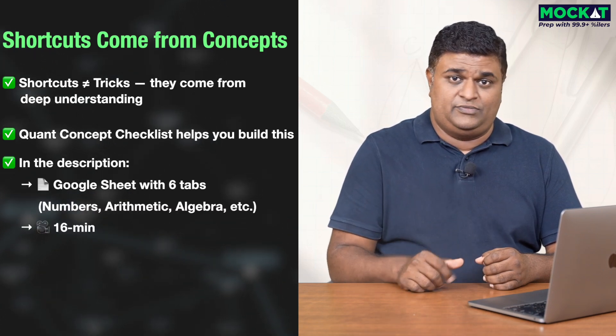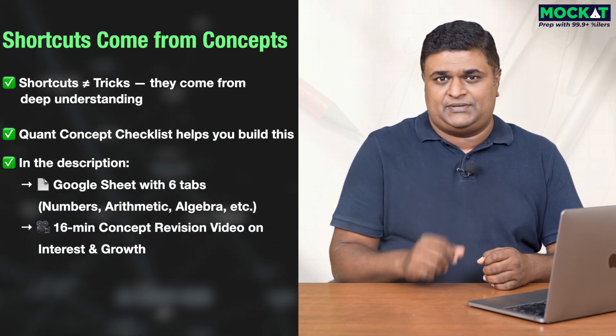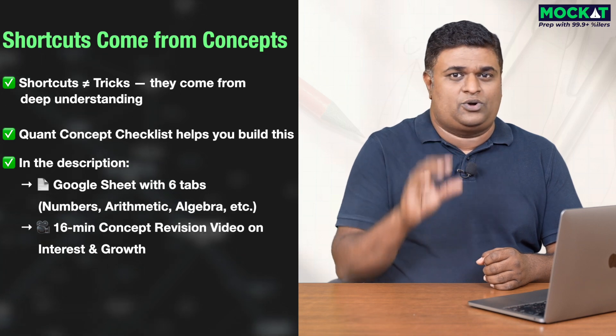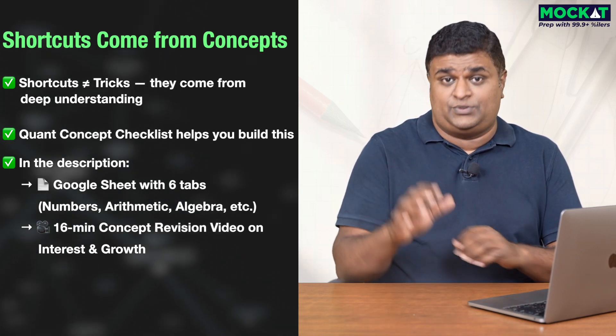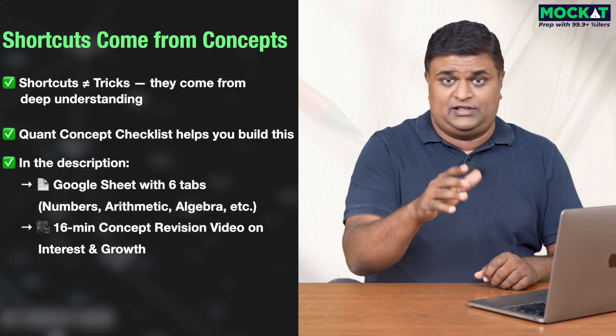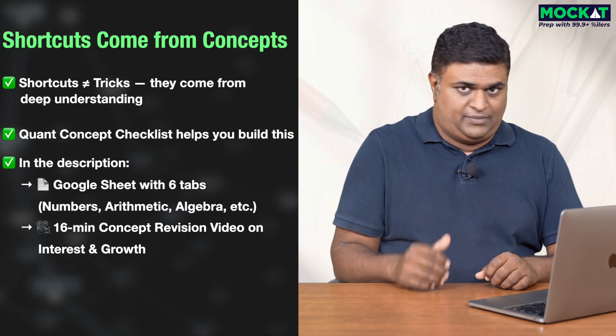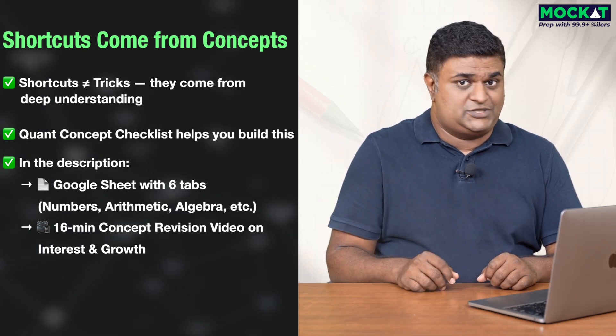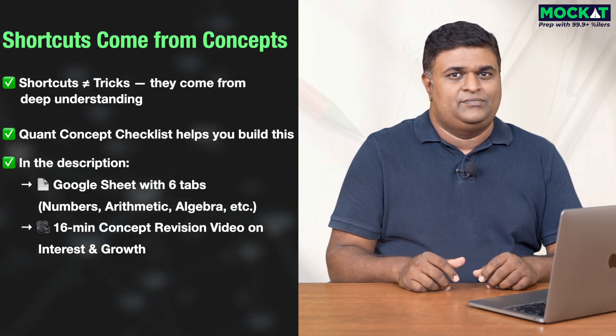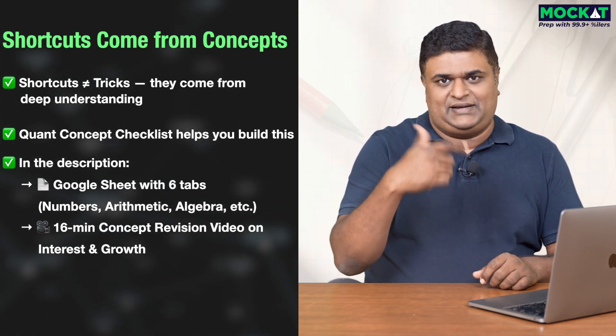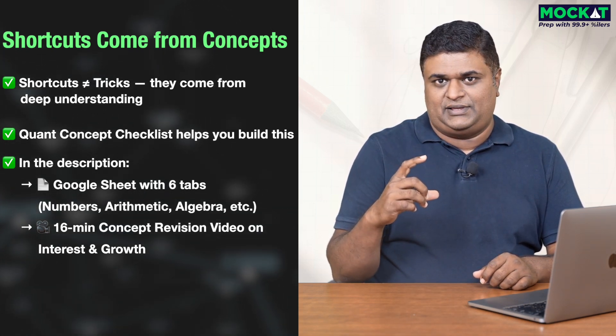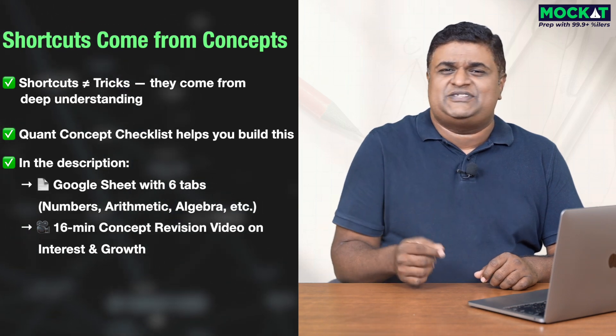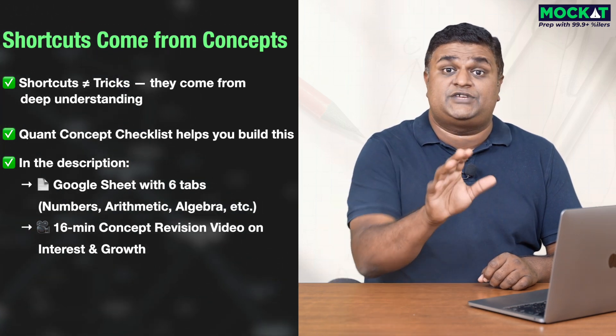In the description below, you have two items. First is a Google sheet that contains the quant concept checklist. You have six sheets over there: Numbers, arithmetic 1, arithmetic 2, algebra, modern maths and geometry. The second is a link to the interest and growth concept revision video. The entire concept checklist items are explained in terms of a 16-minute video just for interest and growth.